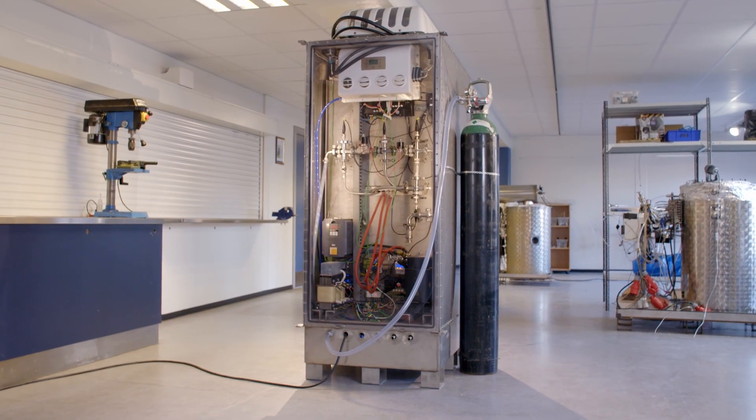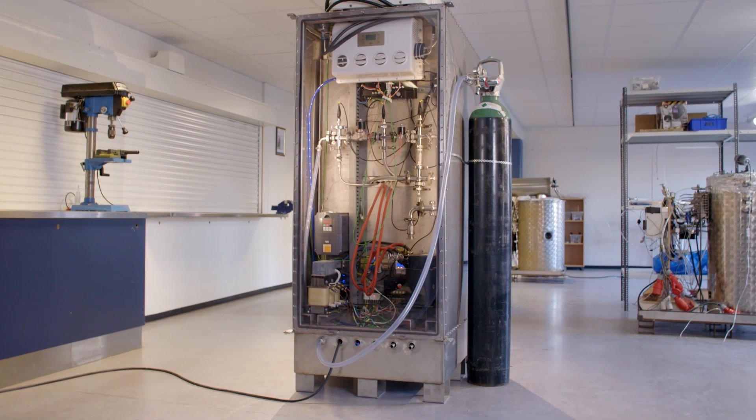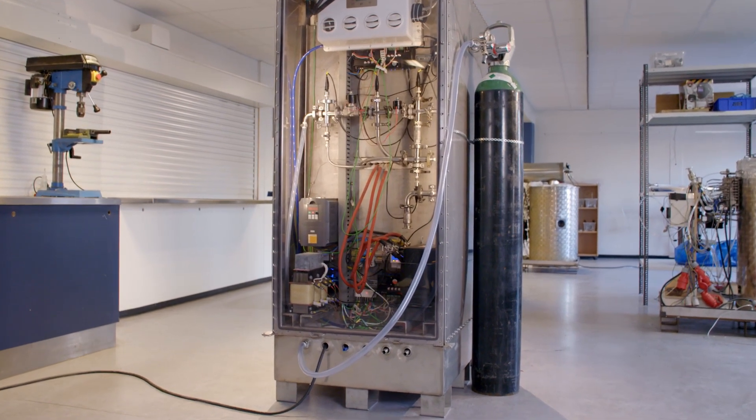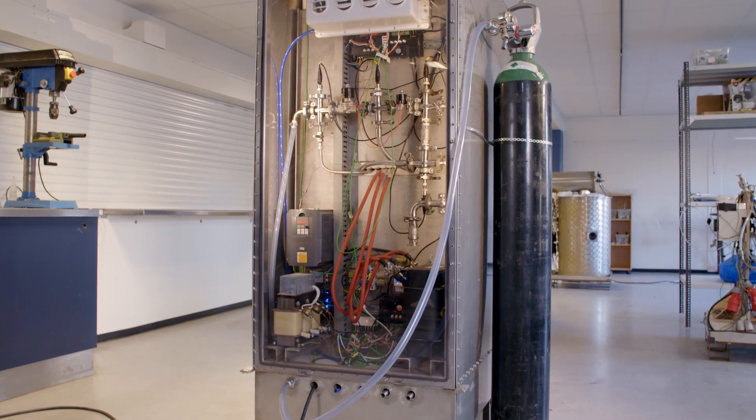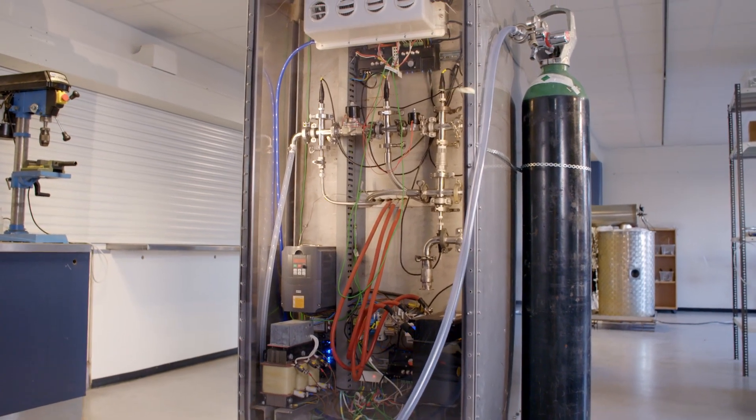This is the Copenhagen Atomics Portable Molten Salt Loop. This is the most basic tool for developing molten salt systems. They are called loops because they circulate the salt around and around in a loop.